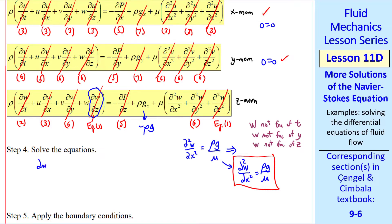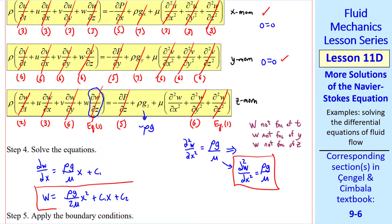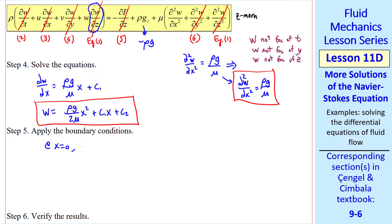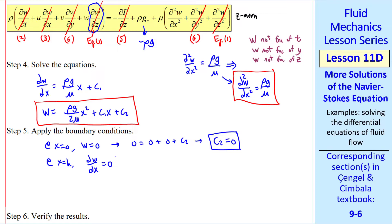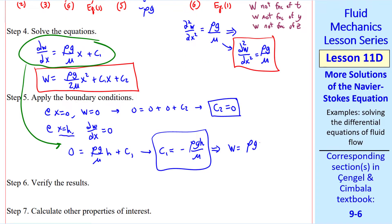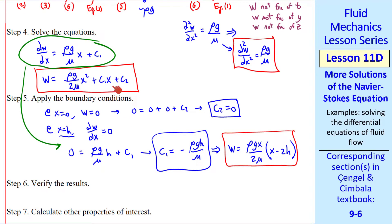Step four is to solve the system of equations. We have only one equation left, which we integrate once — adding constant c1 — and integrate again, adding constant c2. Applying the no-slip condition at x equals zero gives w equals zero, so c2 equals zero. At x equals h, the interface condition gives dw/dx equals zero, which yields c1 equals negative rho g h / mu. Thus, w becomes (rho g x) / (2 mu) times the quantity (x minus 2h).